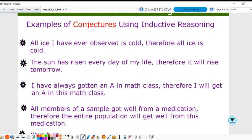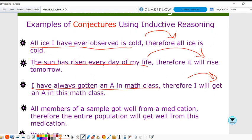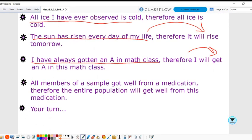It is an unproven statement based on our observations. All ice I have ever observed is cold, therefore all ice is cold. The sun has risen every day of my life, therefore it will rise tomorrow. I have always gotten an A in math class, therefore I will always get an A in this math class. All members of the same sample got well from a medication, therefore the entire population will get well from this medication. We recognize a pattern and make an assumption. Come up with your own conjecture.